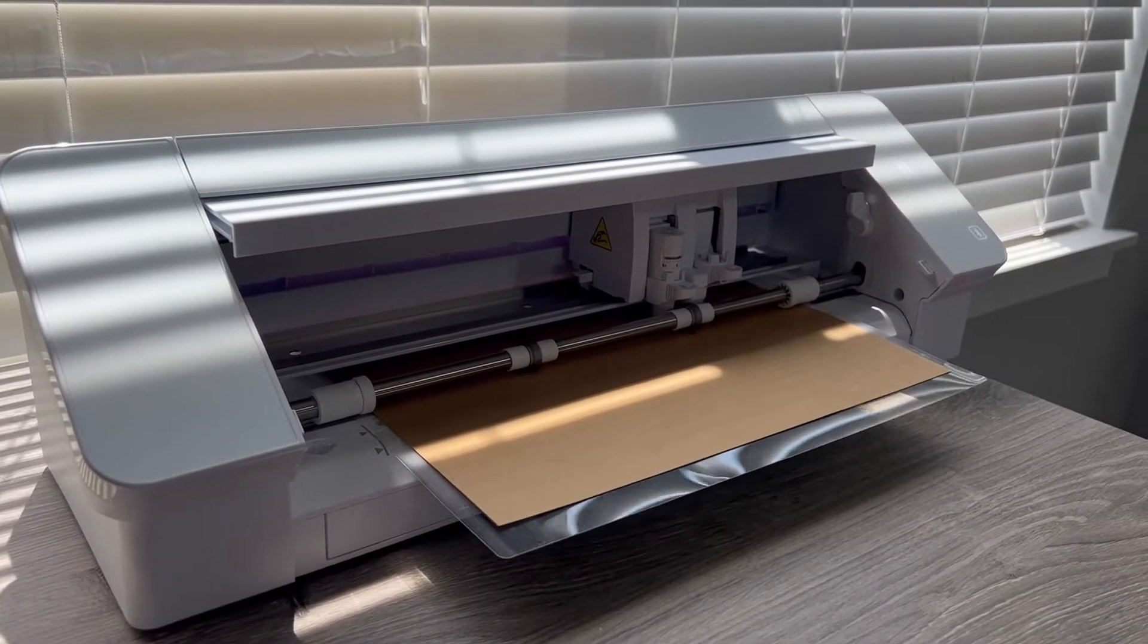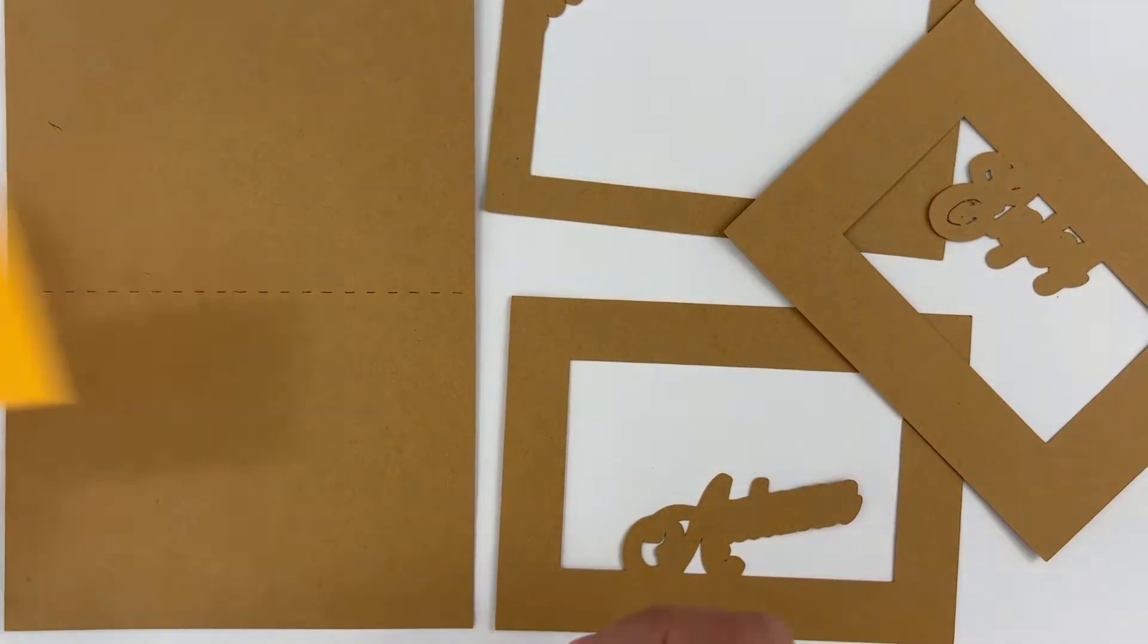Begin by cutting each of the pieces on your Silhouette or Cricut machine. This project uses a lot of scraps since many of the pieces are small.